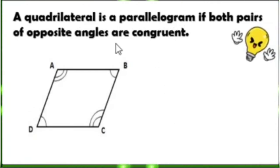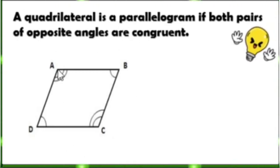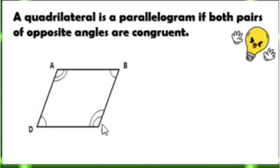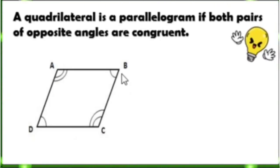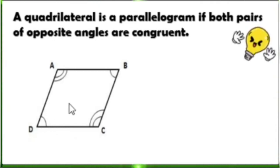Next condition: a quadrilateral is a parallelogram if both pairs of opposite angles are congruent. We have here quadrilateral ABCD. Angle A is congruent to its opposite, angle C. Angle B is also congruent to angle D. Therefore, quadrilateral ABCD is a parallelogram.